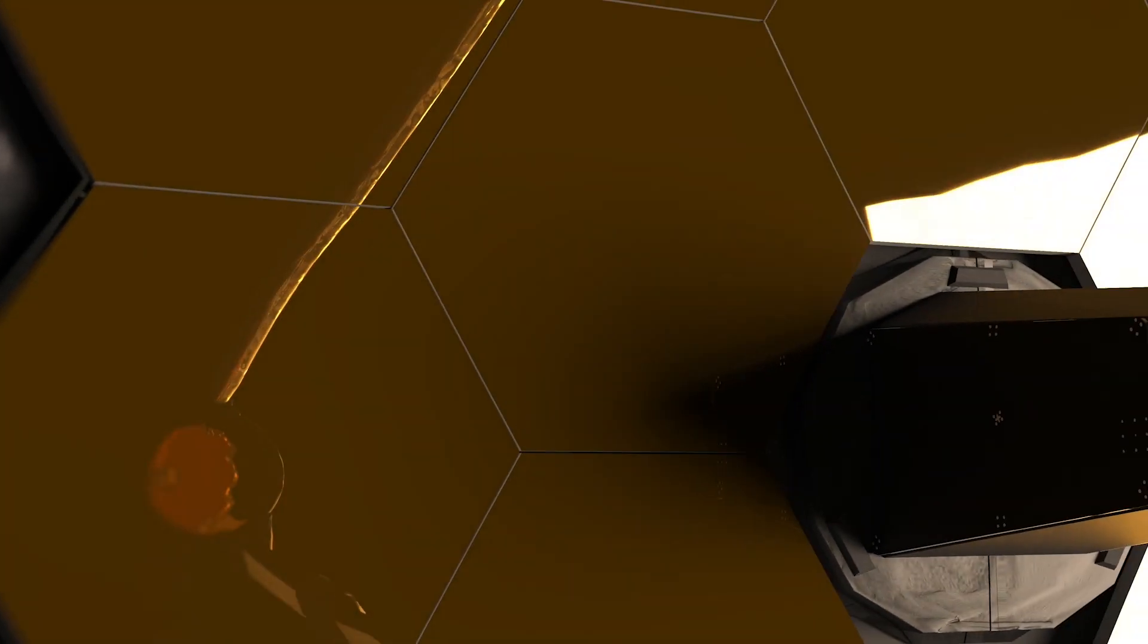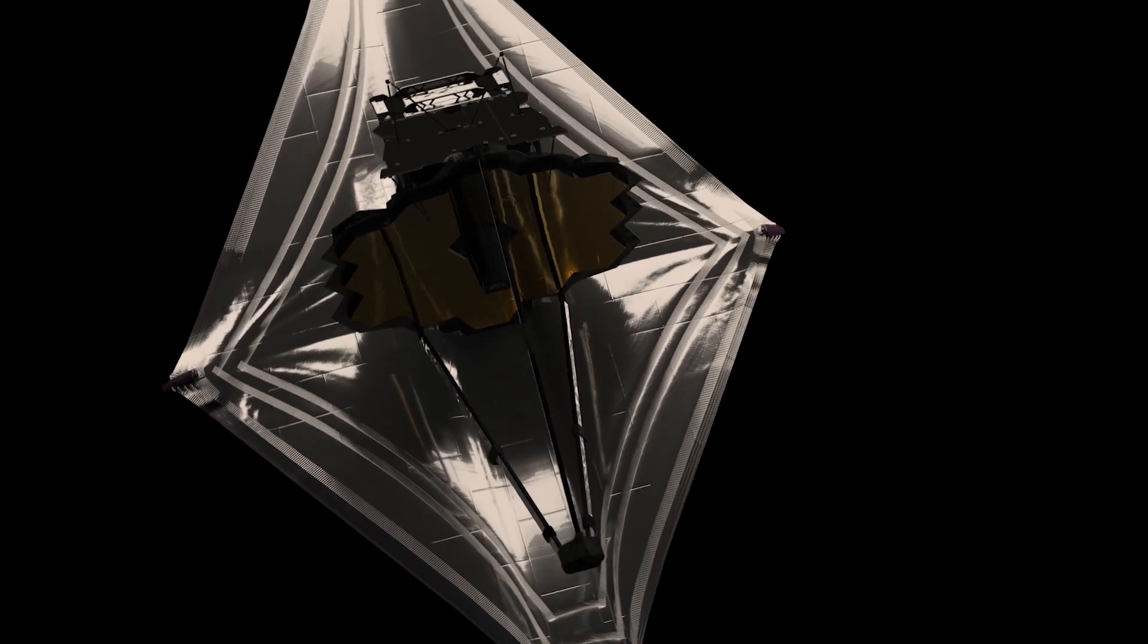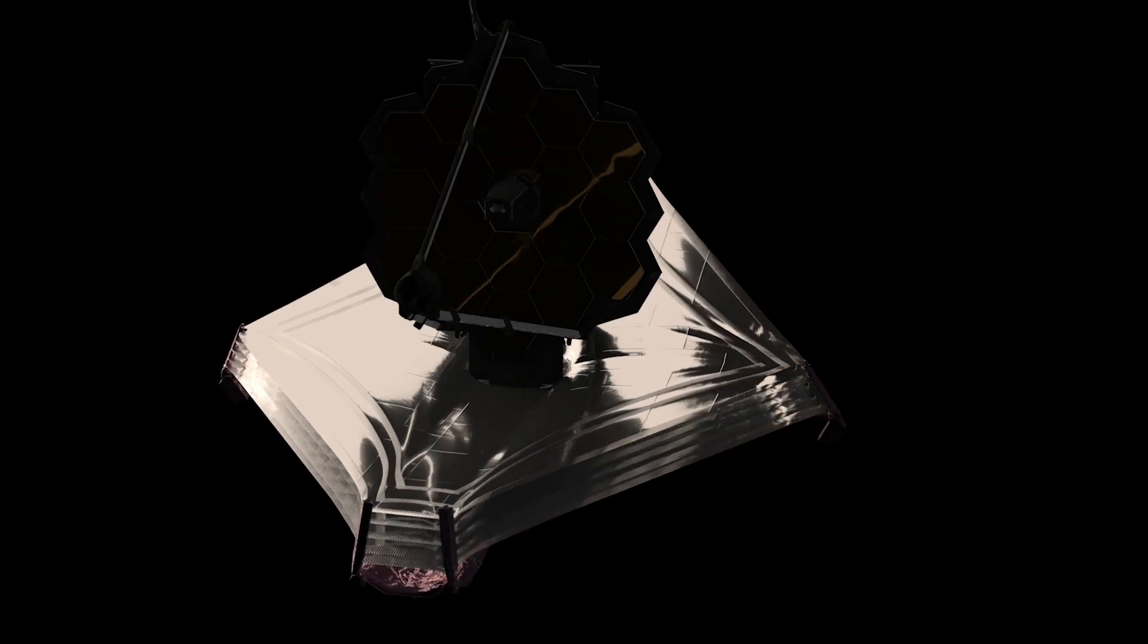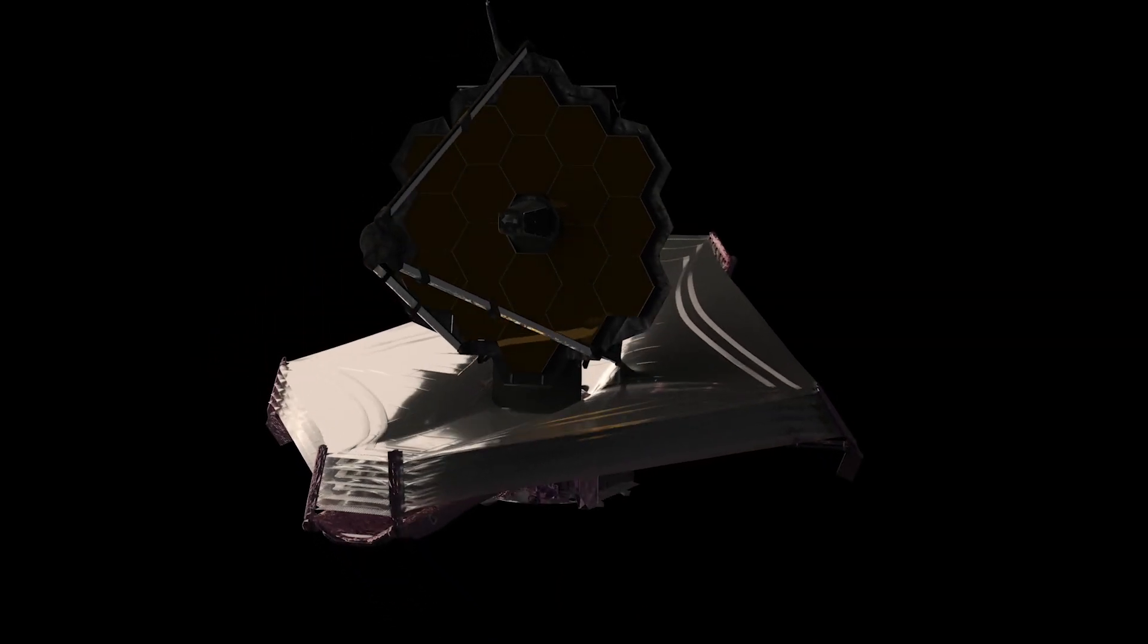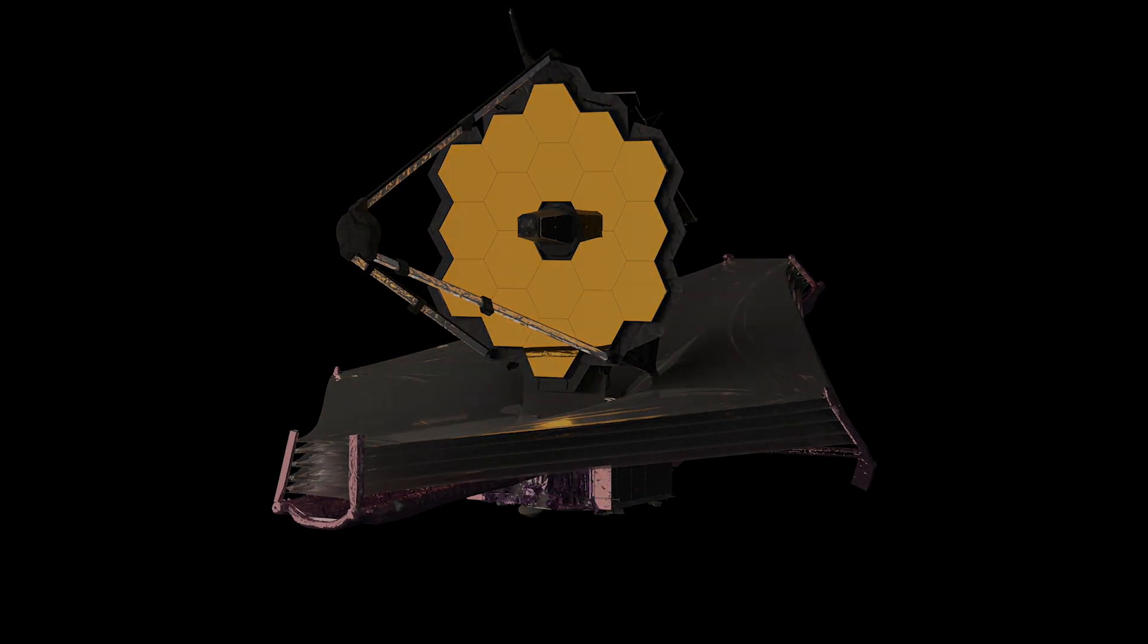It will also be able to see objects like the first galaxies that are so far away that the expansion of the universe has made their light shift from visible to infrared. The Webb Telescope's cameras are sensitive to heat from the sun. Just like you might wear a hat or visor to block the sun from your eyes, Webb has a sunshield to protect its instruments and mirrors.